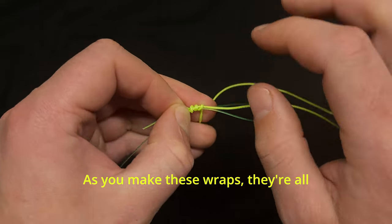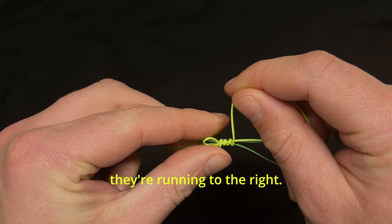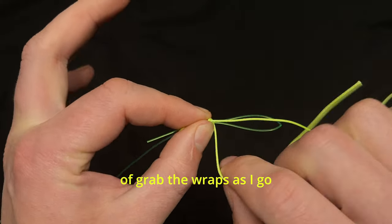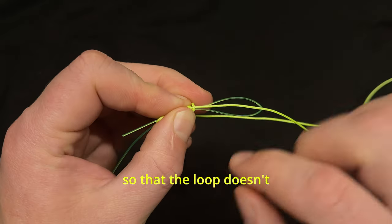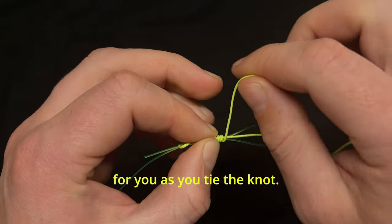As you make these wraps they're all going to be running in the same direction. In this case they're running to the right. As I make those wraps, I adjust my fingers to grab the wraps as I go so that the loop doesn't move on me. You can see what works for you as you tie the knot.